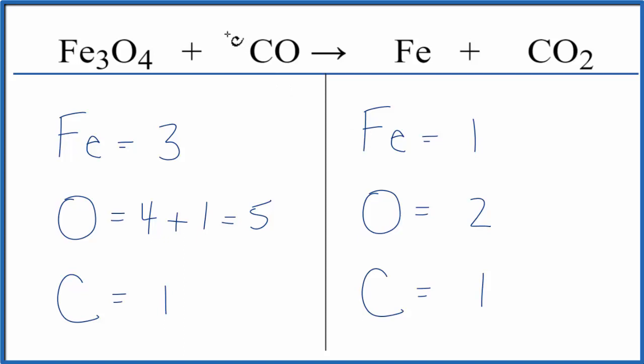I'm thinking if I put a four in front of the CO. That would give me one times four. That gives me four carbons. That's an even number. And let's update our oxygens here. I'd have the four plus the one times the four. That would give me eight oxygens. So now I have even numbers.